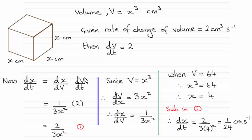So dx/dt then is dx/dV times dV/dt. We've connected two rates of change. Now dx/dV, we can get that quite easily by taking V as x³.